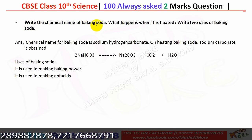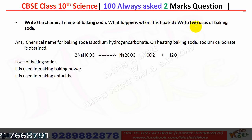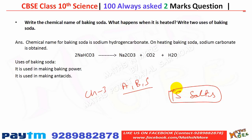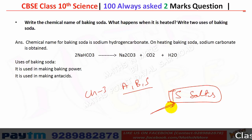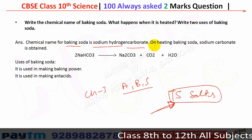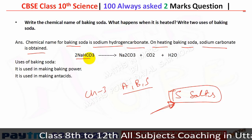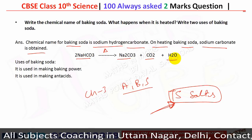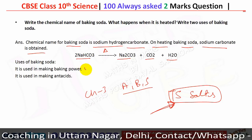The chemical name of baking soda is sodium hydrogen carbonate. On heating, baking soda gives sodium carbonate: 2NaHCO₃ → Na₂CO₃ + CO₂ + H₂O. Two uses of baking soda: it is used for making baking powder and it is used in making antacids. Note: all five salts at the end of NCERT Chapter 3 (Acids, Bases and Salts) are important for the board exam.